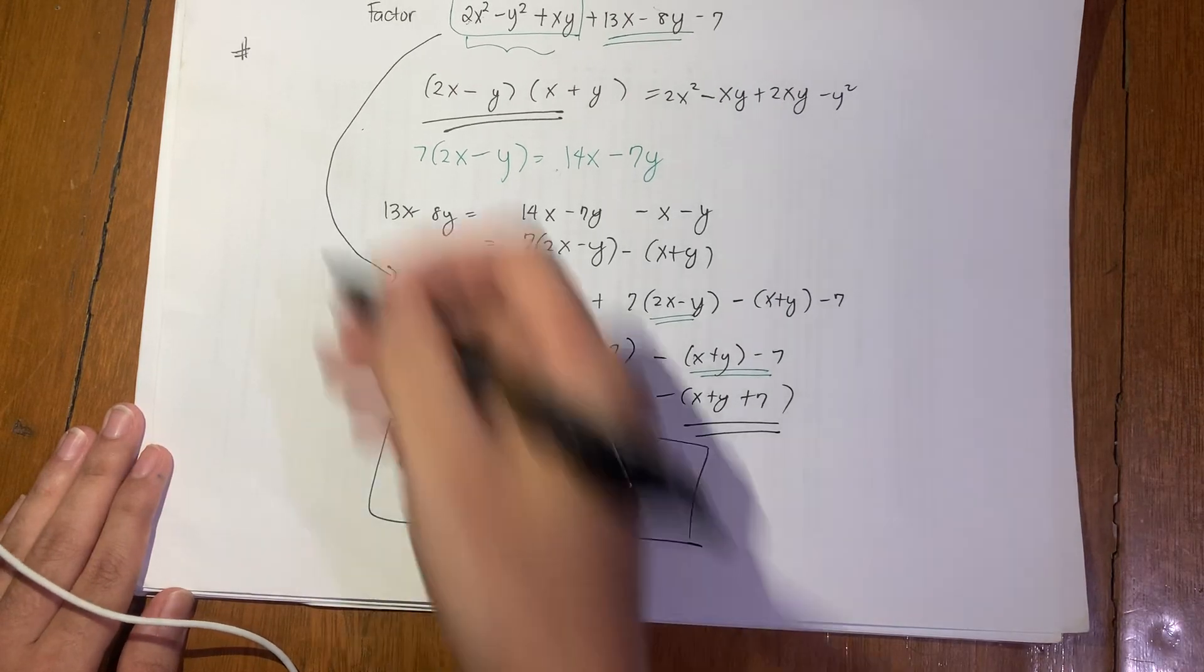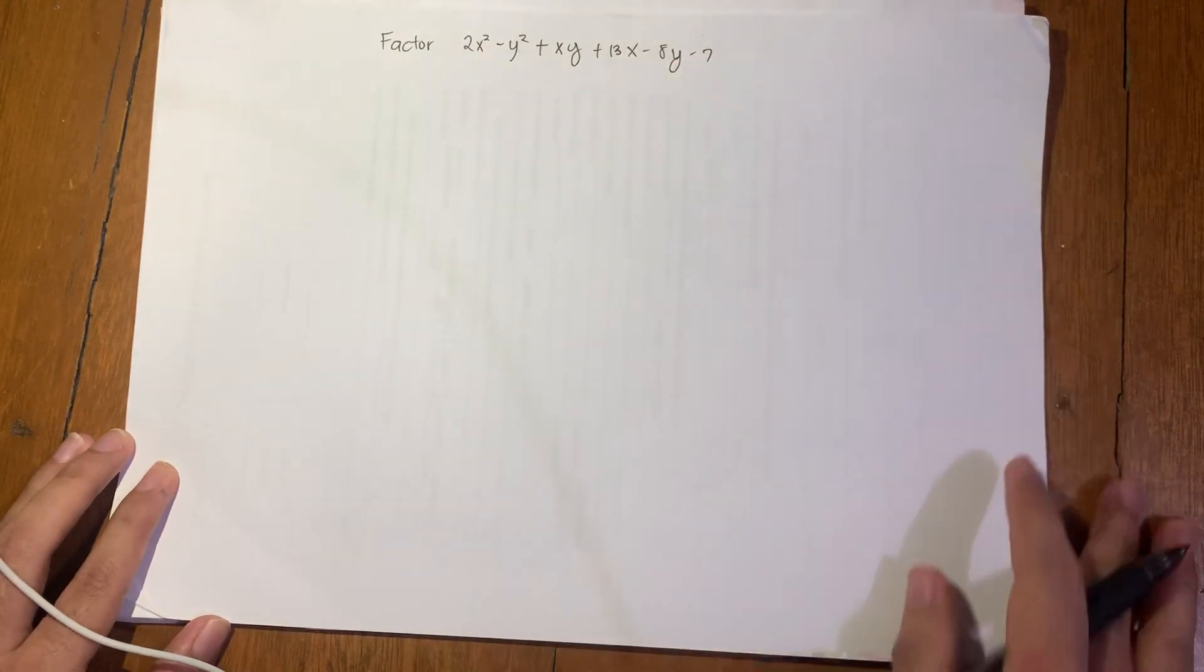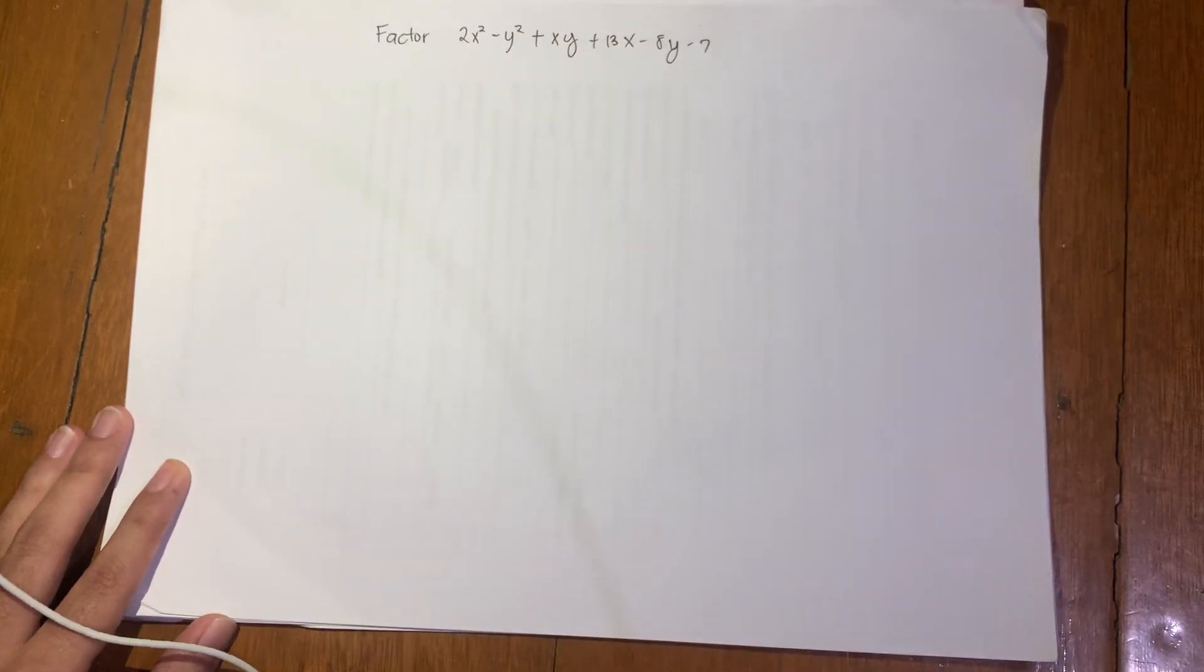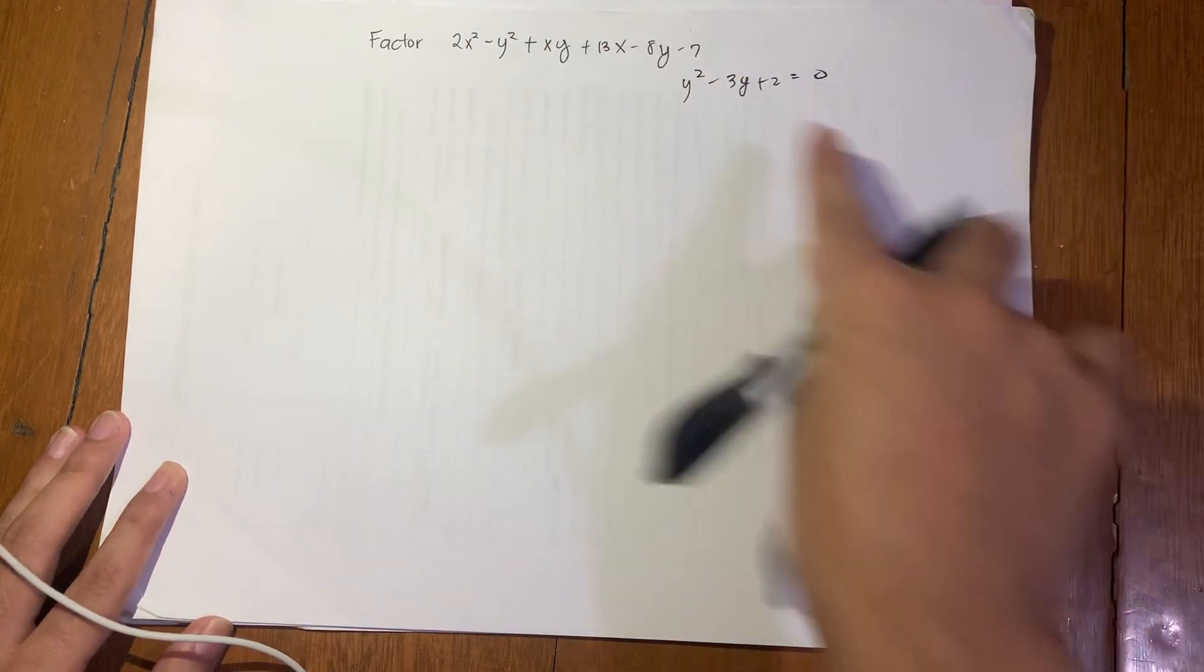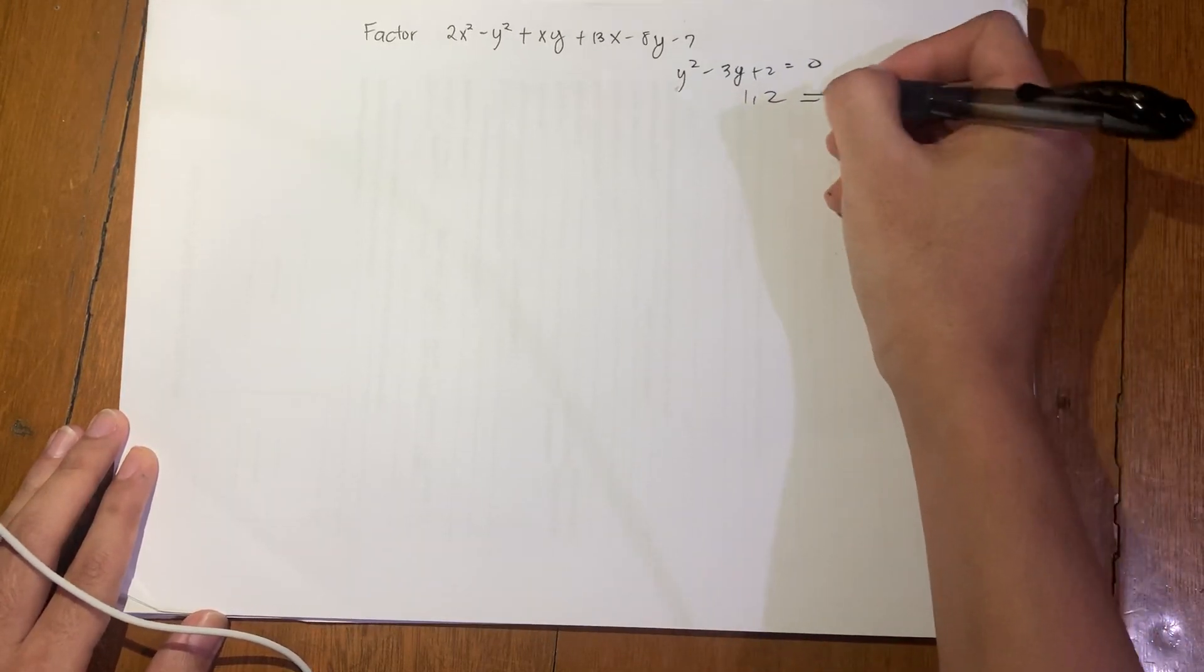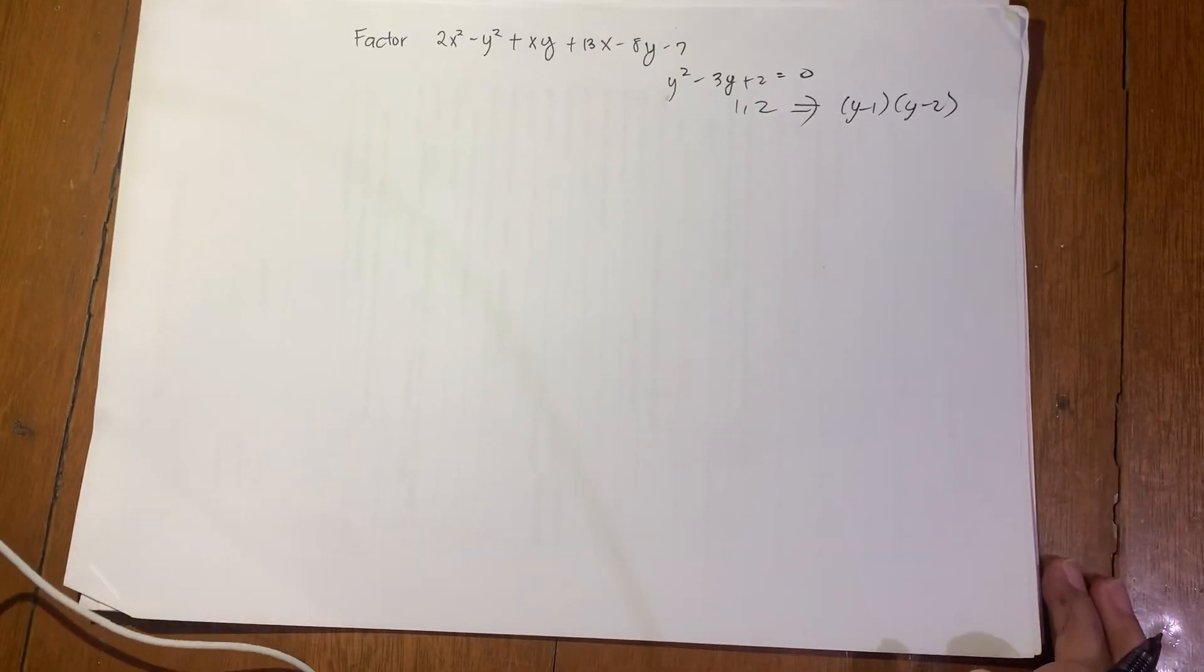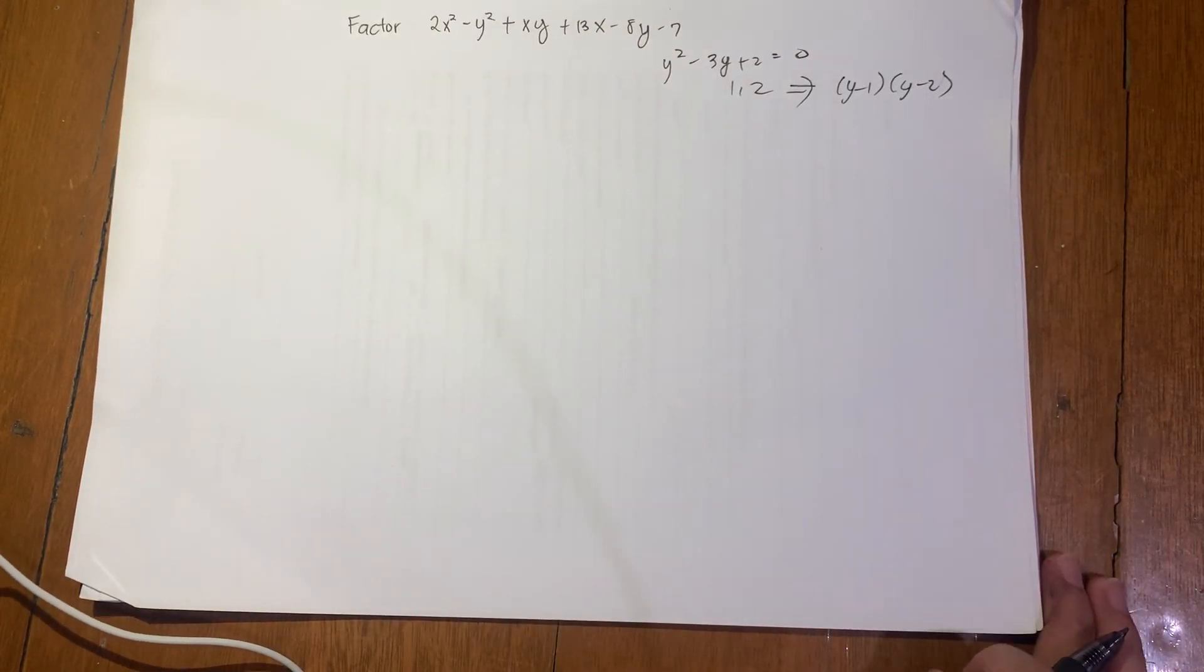So I present solution number 2, maybe you can pick up some other ideas. For this solution, my idea is to turn this into a quadratic equation in terms of y. So my goal is to solve this equation in terms of y. For example, if I have the equation y squared minus 3y plus 2 equals 0, we know that the solution is 1 and 2. You can solve that using quadratic formula. Since the solution is 1 and 2, I can factor this as (y - 1)(y - 2).